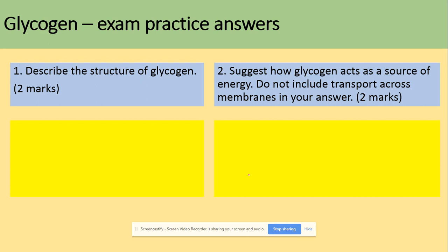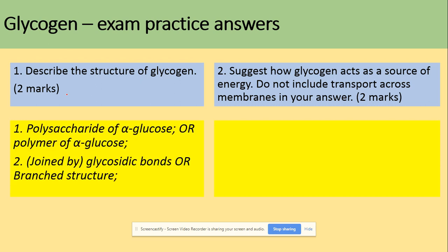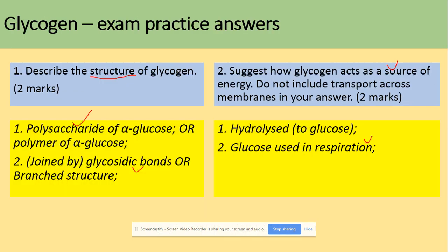In terms of glycogen, we have two exam questions: describe the structure, and suggest how glycogen acts as a source of energy — do not include transport across membranes in your answer. Each is worth two marks. For structure: it's a polysaccharide of alpha glucose joined by glycosidic bonds. For how it acts as a source of energy: use the 'so what' approach — hydrolysis to glucose and use for respiration always gives you easy marks.